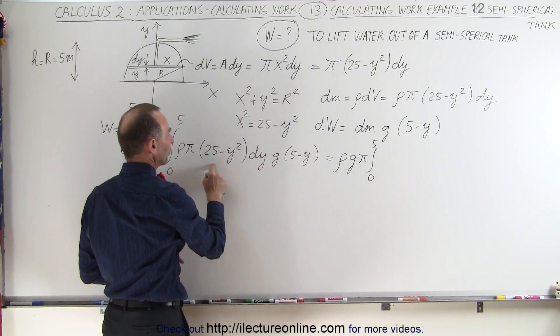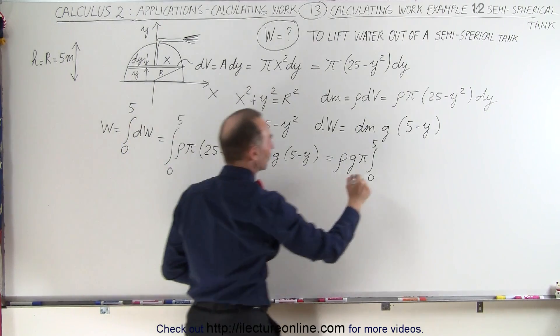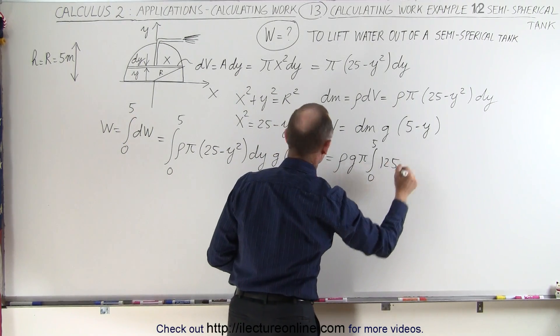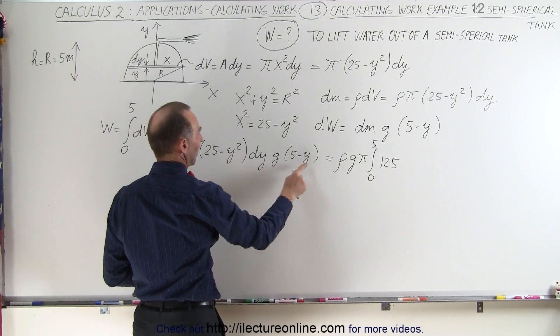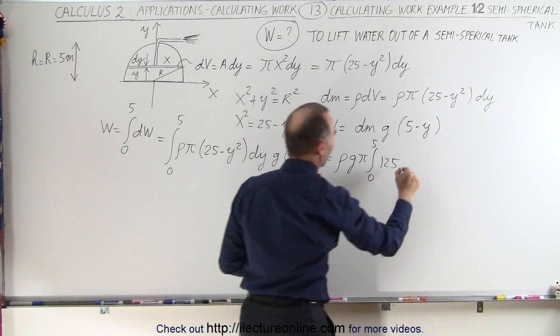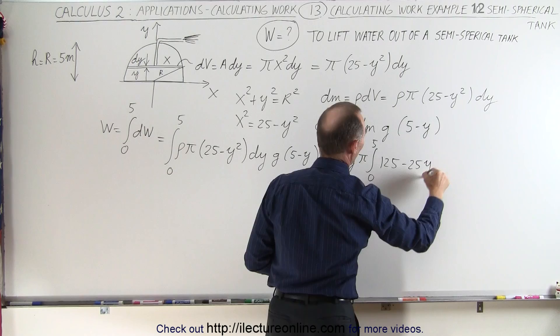Multiply this together, we have 25 times 5, which is 125. We have 25 times minus y, which is minus 25y.